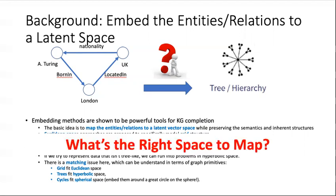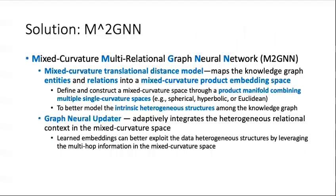Then we come up with another question: what is the right space to map? To answer this question, we come up with a solution: M²GNN, Mixed-Curvature Multi-Relational Graph Neural Networks. It consists of two important components, including the mixed-curvature translational distance model and graph neural updater.